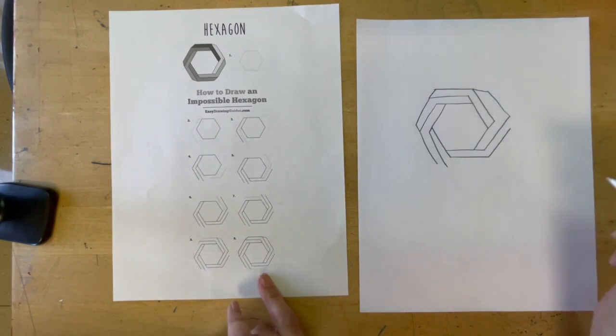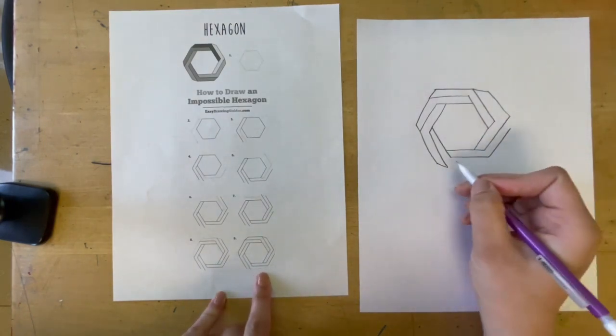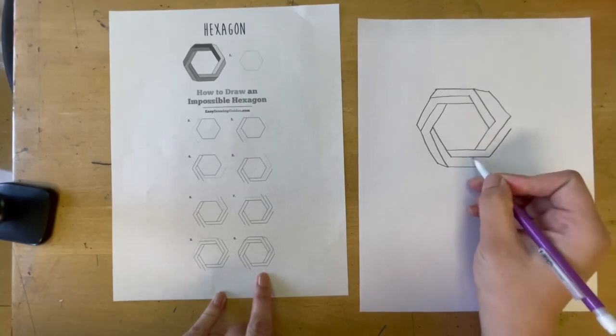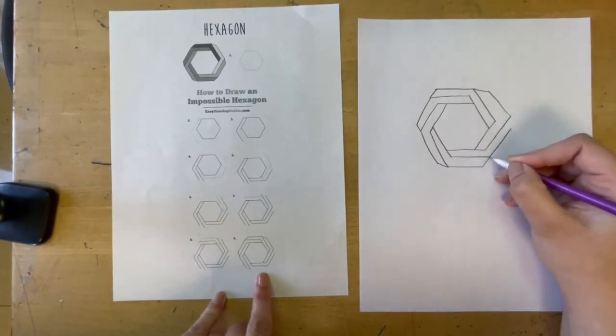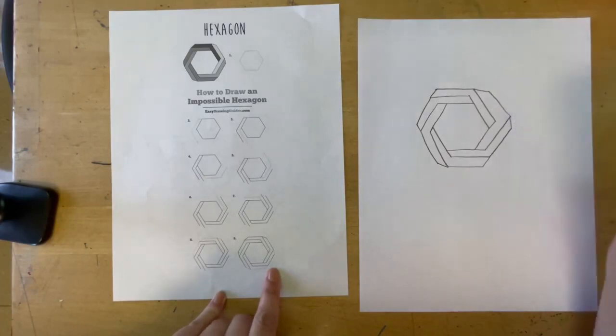And then step nine looks like we're doing the same thing around the bottom. We are connecting here, drawing a new line parallel here, connecting these corners, and then connecting this one right here as well.